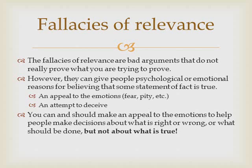The fallacies of relevance are fallacies in which the premises do not support the conclusion — they are irrelevant to the conclusion. The fallacies of relevance are bad arguments that do not really prove what you're trying to prove. However, they can give people psychological or emotional reasons for believing that some statement of fact is true. For example, there may be an appeal to the emotions such as fear or pity, or there may be an actual attempt to deceive. You can and should make an appeal to the emotions to help people make decisions about what is right or wrong, or about what should be done in a given situation — but not about what is true. Because something can be true whether you're happy about it or not.